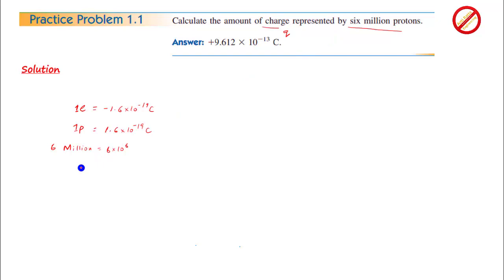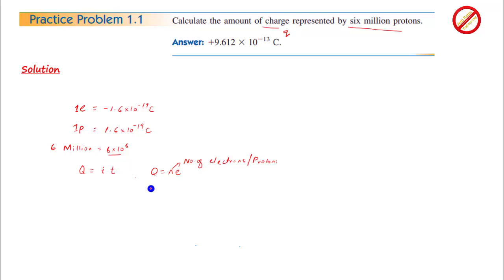Charge का आपको पता है कि आपके पास दो formulas हैं: एक Q is equal to It, और एक Q is equal to NE, जिसमें N जो है वो number of electrons होते हैं या फिर number of protons होते हैं। हमारे case में जो दिया है वो है number of protons, so N की value है 6 into 10 raised to power 6. So Q is equal to 6 into 10 raised to power 6 into 1.6 into 10 raised to power minus 19 coulomb.